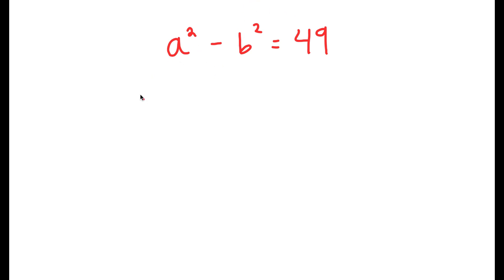So to solve this, I'm going to use the property that states that if I have something in the form x squared minus y squared, this is equal to x plus y times x minus y.